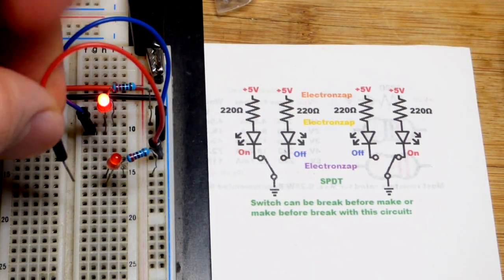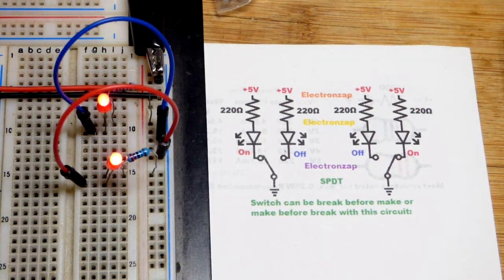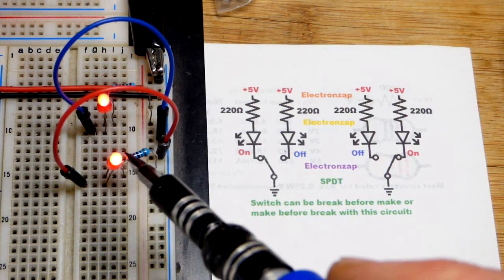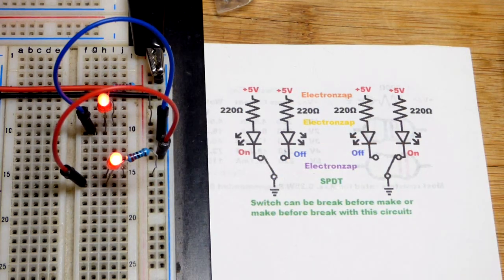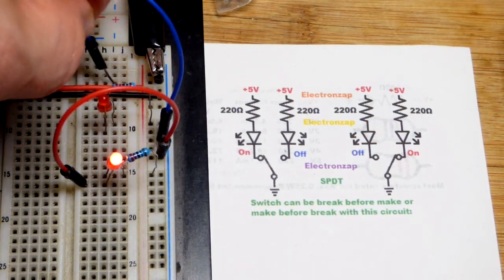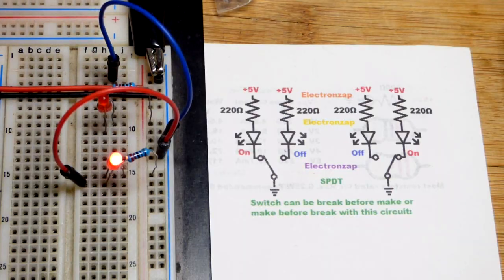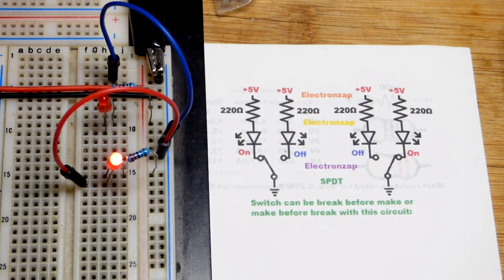It's thick enough where if you set the lever halfway, then you make the second connection before you break the original connection. So that would be a make before break. Pretty simple there.